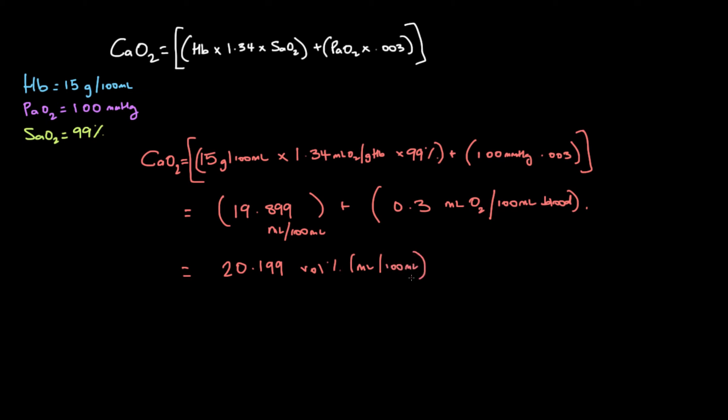Our result is 20.199 volume percent, or mls per 100 mls of blood. That would be a fairly normal oxygen content — around 20.